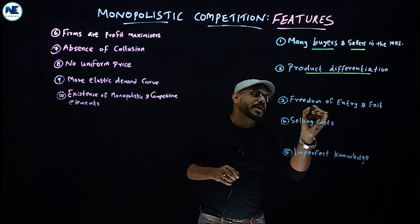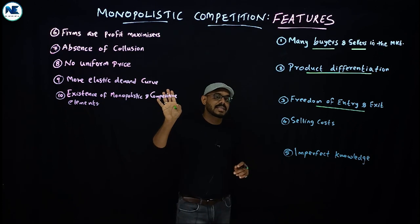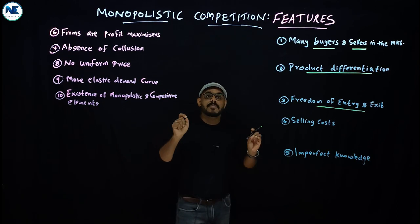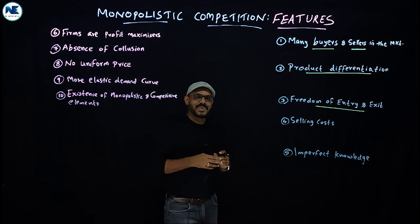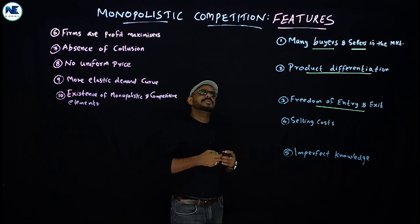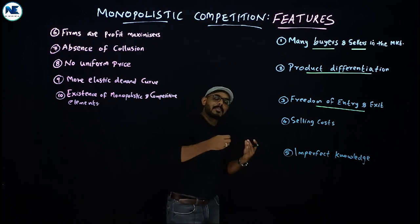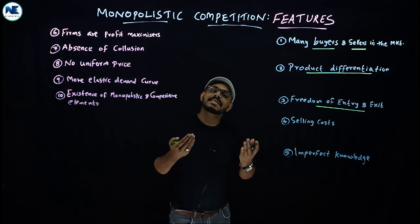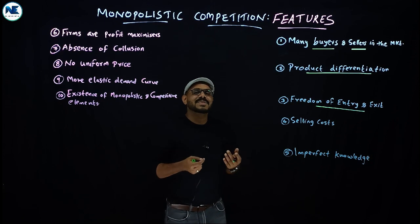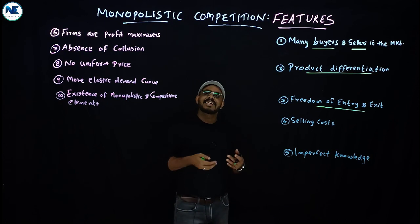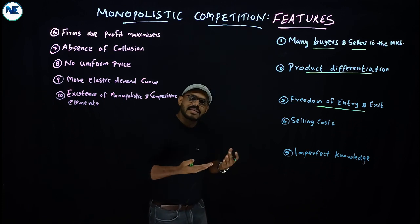The third point is freedom of entry and exit — similar to perfect competition, there is easy entry and easy exit in monopolistic competition. When firms in the market are earning profits, new firms are attracted to enter easily. When firms face losses, they are free to exit the market.